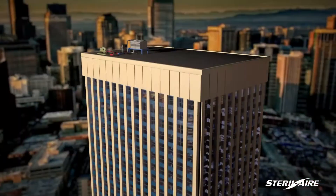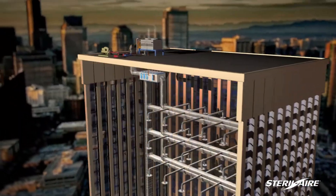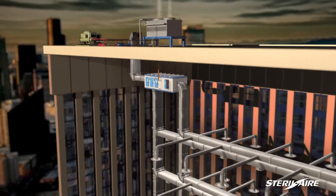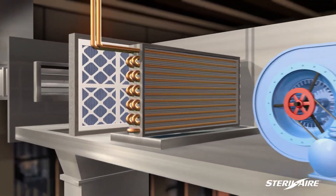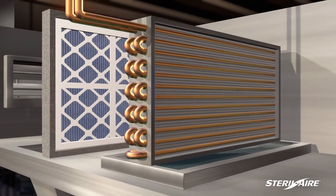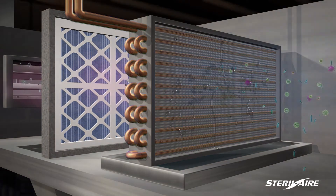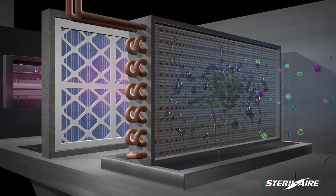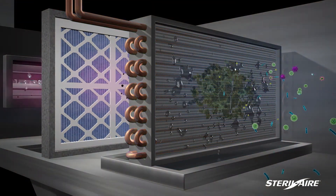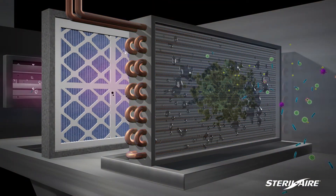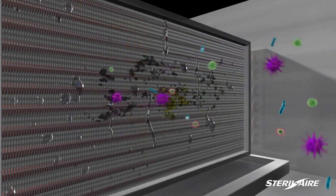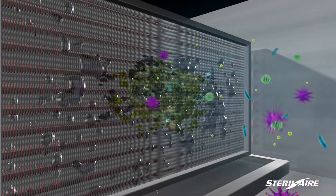Third, and the most serious cause of poor indoor air quality, are the mold and fungi that grow in the coils and condensate drip pans. They form a complex biofilm that produces and releases infectious microorganisms such as MRSA, Pseudomonas, and Aspergillus.